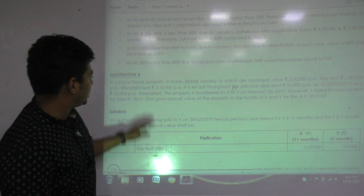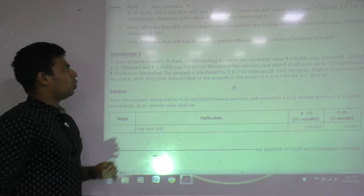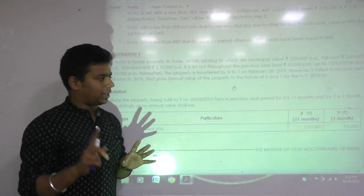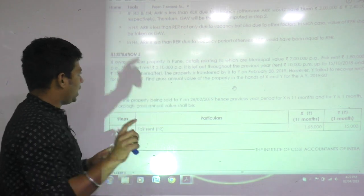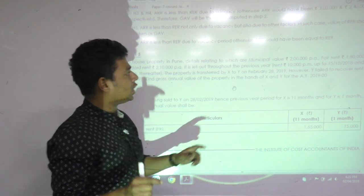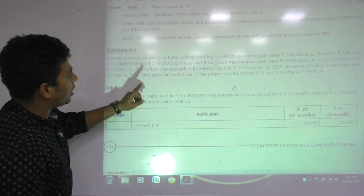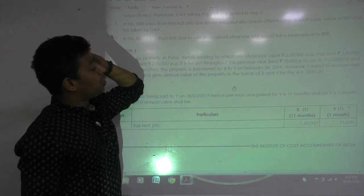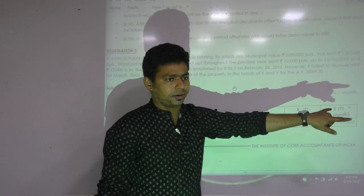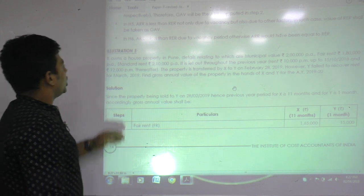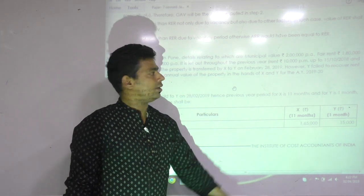Now house 5 is your homework, but let's discuss here. X owns a house property in Pune. Details: Municipal value 2 lakh per annum, fair rent 1 lakh 80 per annum, standard rent 2 lakh 10 thousand per annum. It is let out throughout the previous year. Actual rent was 10,000 per month up to 15th October and 12,000 per month thereafter.